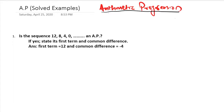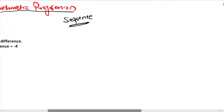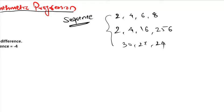The first term is sequence. A group of numbers which are arranged in a definite order following a certain rule is called a sequence. For example: 2, 4, 6, 8 — or 2, 4, 16, 256 — or 30, 27, 24. These are all examples of sequences.